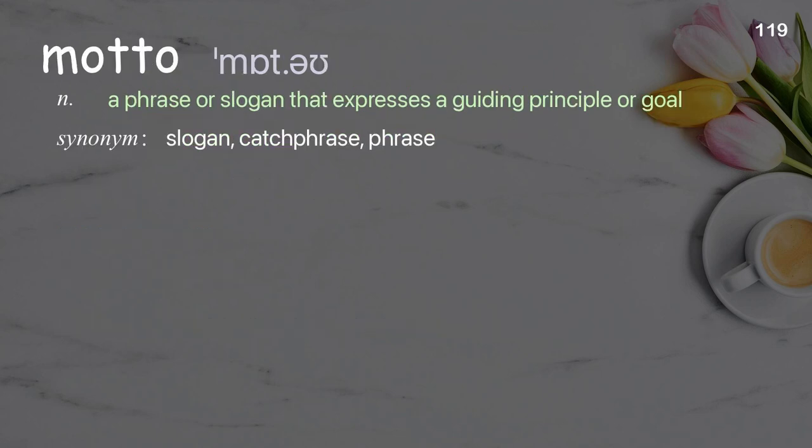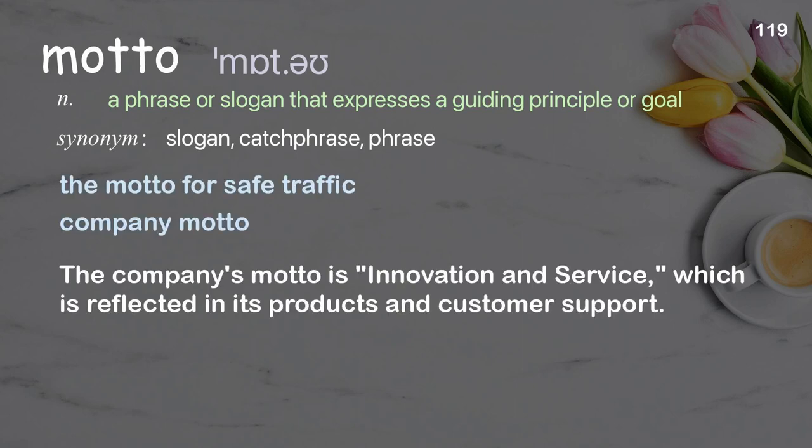Motto: a phrase or slogan that expresses a guiding principle or goal. Examples: the motto for safe traffic, company motto. The company's motto is innovation and service, which is reflected in its products and customer support.